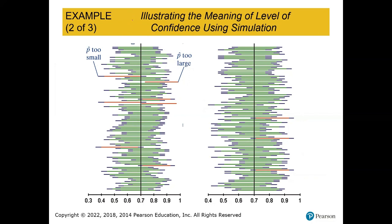We end up with 10 that did not include the proportion. The purple represents the tail part and the green represents the 95%. Anyone that is green falls in the 0.70 range. Some intervals are too low, some are too large. Counting them: 1, 2, 3, 4, 5, 6, 7, 8, 9, 10. Ten out of 200 is 5%, which matches our 95% confidence — 95% of our intervals were accurate, 5% were not.